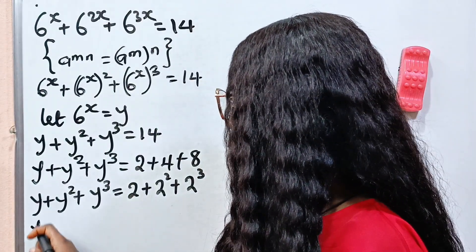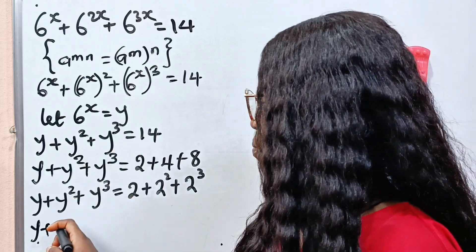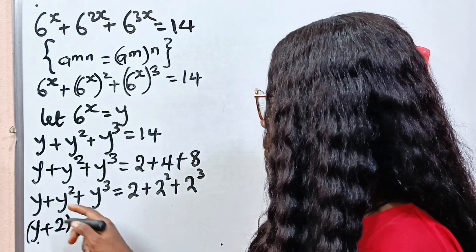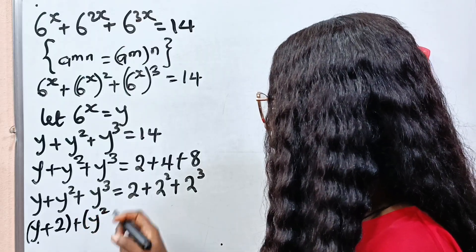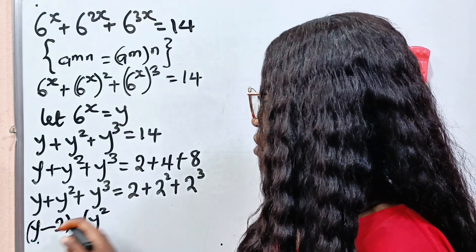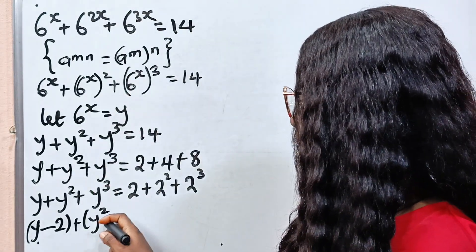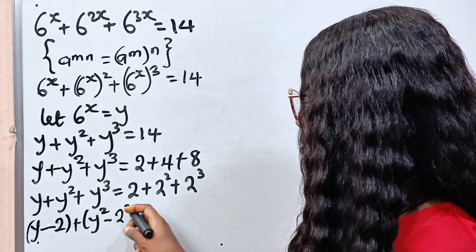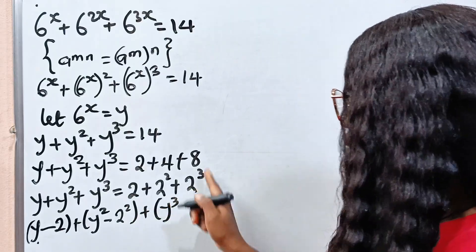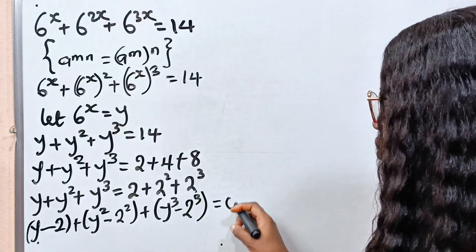We have y minus 2, plus y squared minus 2 squared, plus y to the power of 3 minus 2 to the power of 3, equals 0. Because the positive terms cross over to become negative. So the equation is set equal to 0.